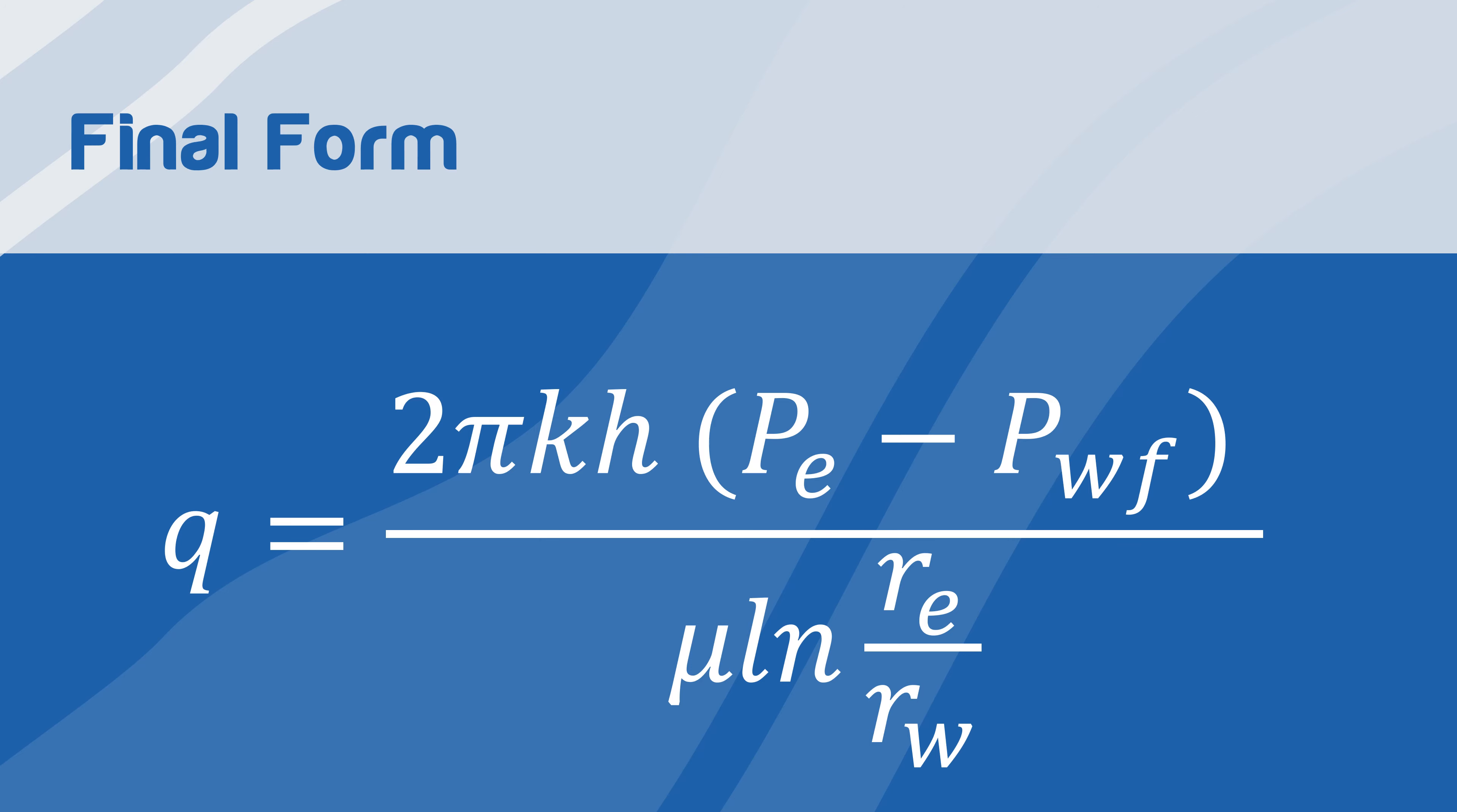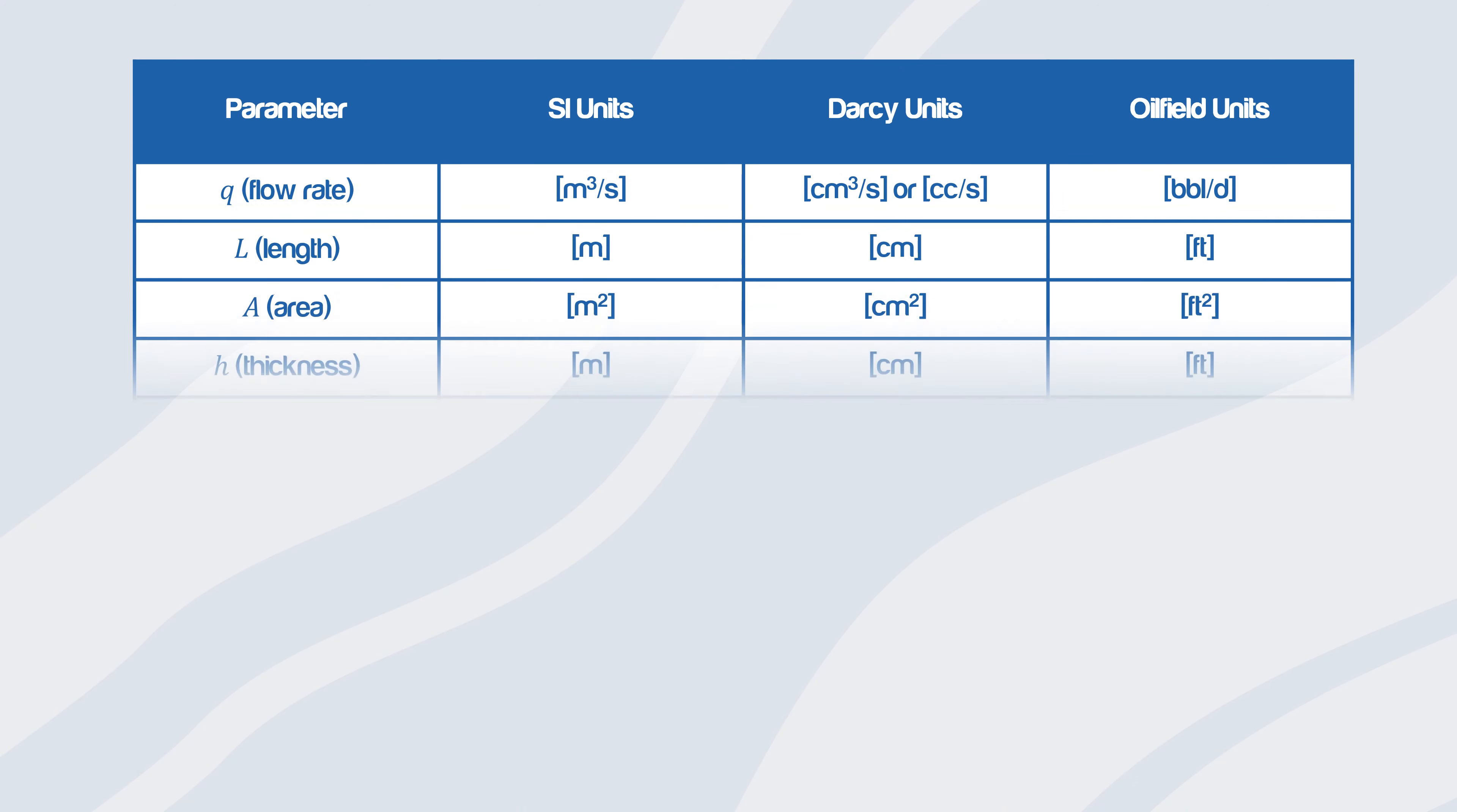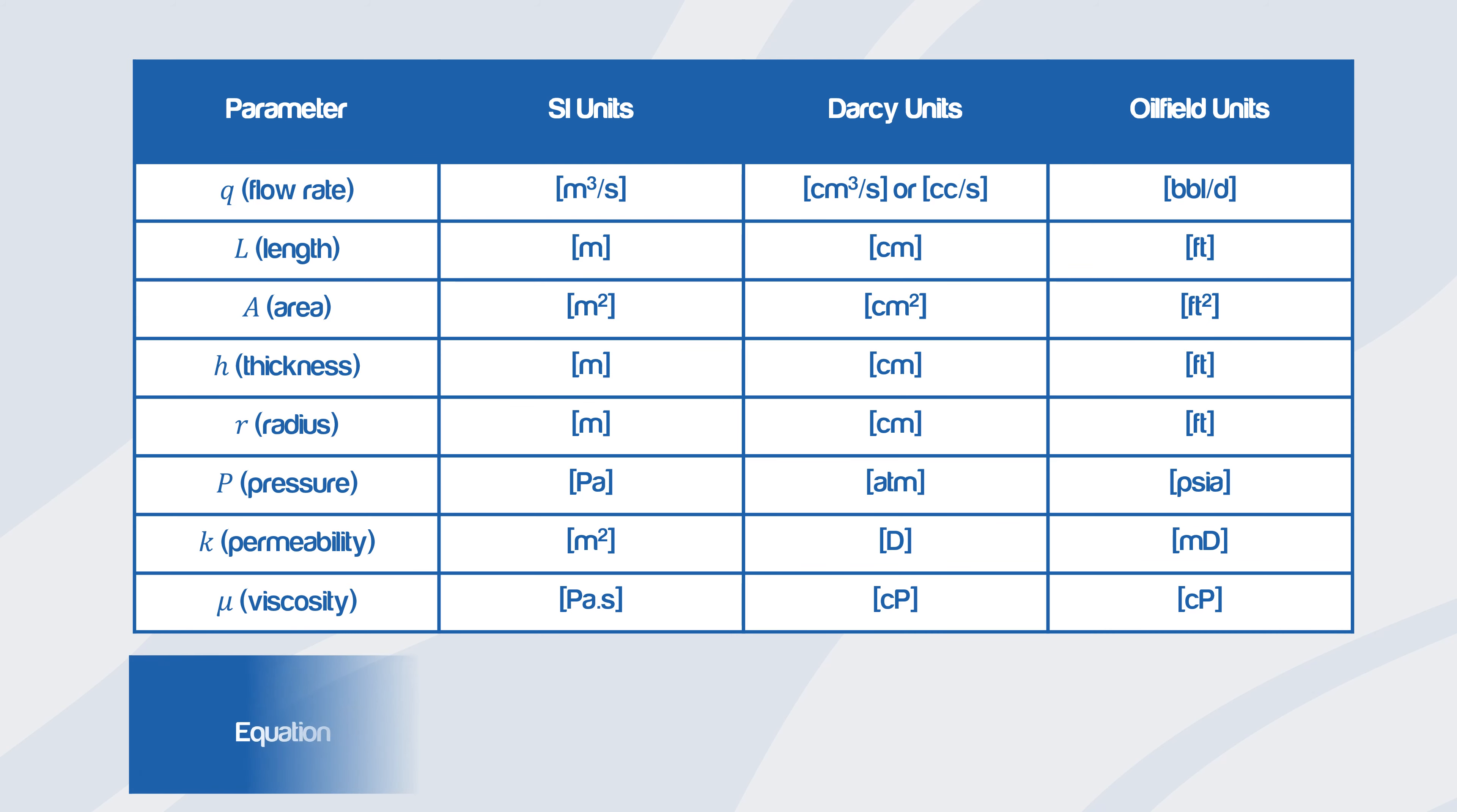When using Darcy's law, three main unit systems can be used to find permeability. These units are explained in this table. It is important to note that since permeability values are very small in meters squared, a unit of Darcy or milliDarcy is used.